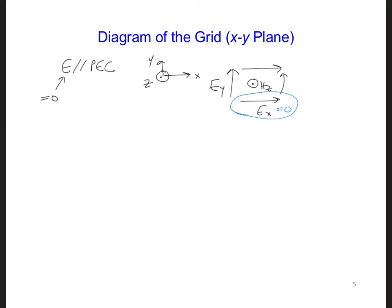Then one half of a grid cell above the screen in the positive z direction, in red I'll draw the three components that are on that plane. So we have ez, hy, and hx.